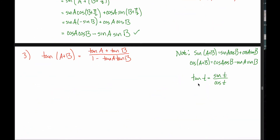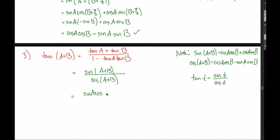This will be a pretty quick video because it all hinges on the fact that the tangent of any angle is the sine of that angle divided by the cosine of that angle. So if I want the tangent of a plus b, that must equal sine of a plus b divided by cosine of a plus b. From my sine angle addition formula, sine of a plus b is sine of a cosine of b plus cosine of a sine of b. And cosine of a plus b from my cosine angle addition formula is cosine of a times cosine of b minus sine of a times sine of b.